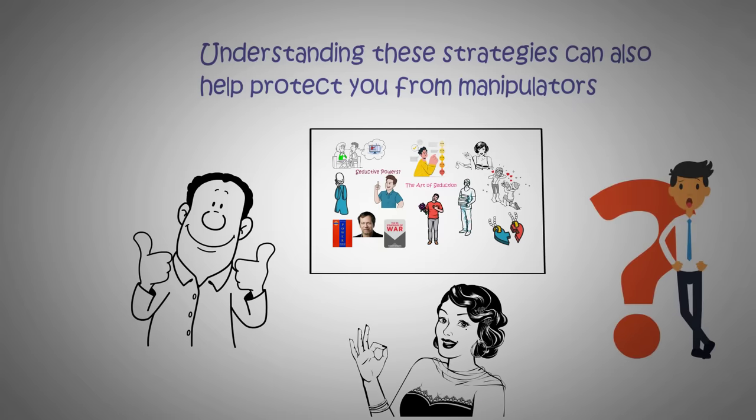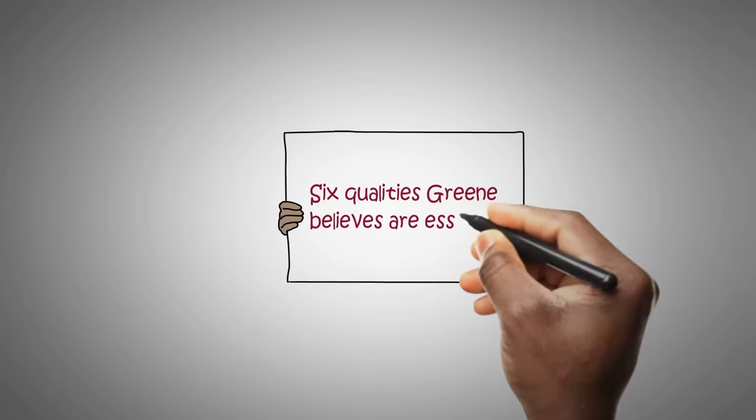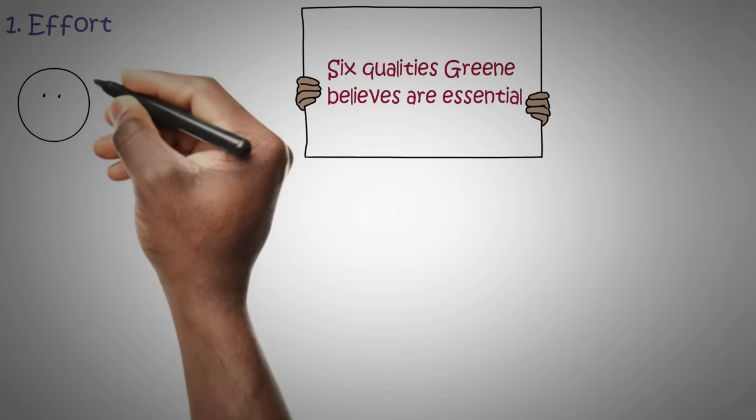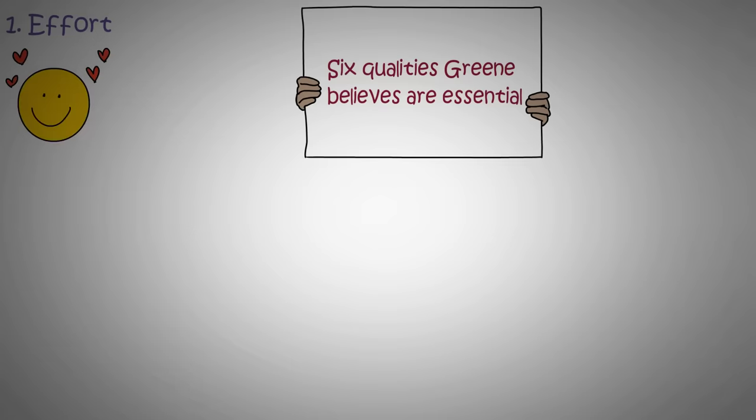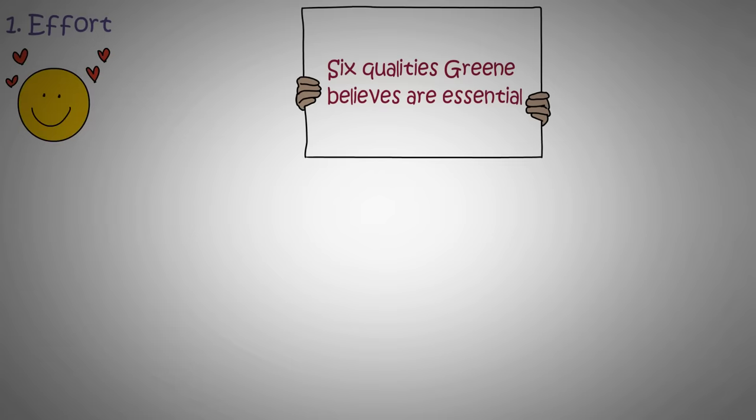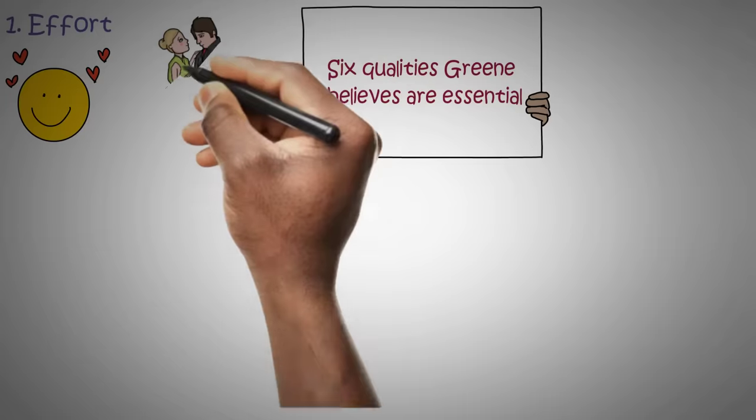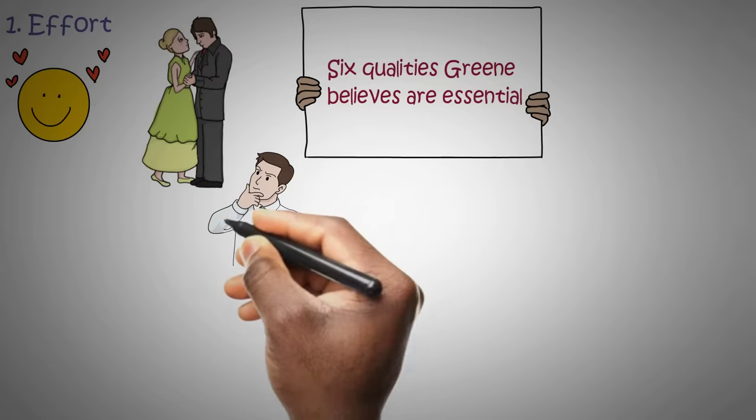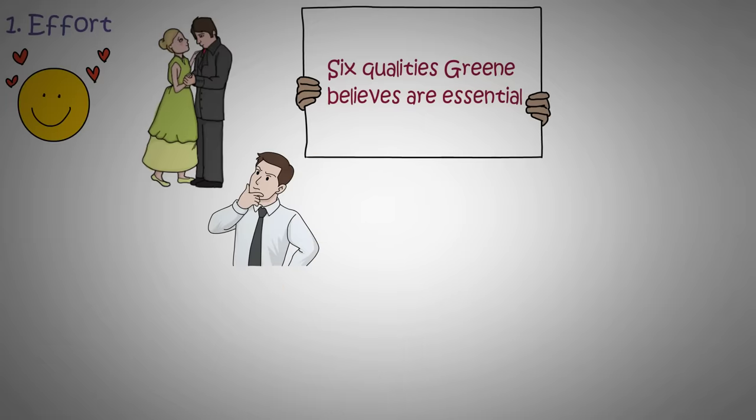Before we dive into the nitty-gritty of seduction, let's talk about what it takes to be a successful seducer. Here are the six qualities Greene believes are essential. One: Effort. Once you've set your sights on someone you want to charm, let's call them your target instead of victim. Put in the effort, keep in touch regularly, and sprinkle some seductive moves into your interactions.